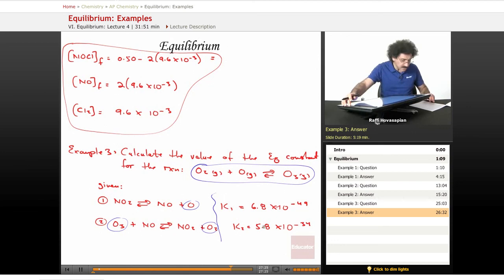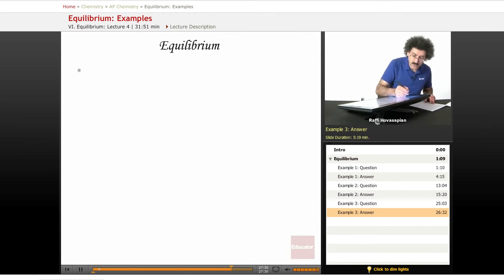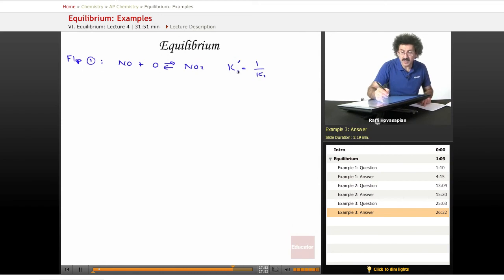So let's go ahead and do this one. In order to actually come up with this, I'm going to flip equation one. I'm going to flip equation one and that'll give me NO plus O goes to NO2. Now when I flip an equation, I take the reciprocal of the equilibrium constant.